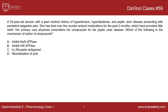Welcome back to DaVinci Cases. This is GI Case 9, the first GI pharmacology case. For this case, we have a 53-year-old woman with a past medical history of hypertension, hyperlipidemia, and peptic ulcer disease presenting with persistent epigastric pain. This is a middle-aged woman with some cardiovascular risk factors, and her history of peptic ulcer disease is likely the etiology of her epigastric pain.